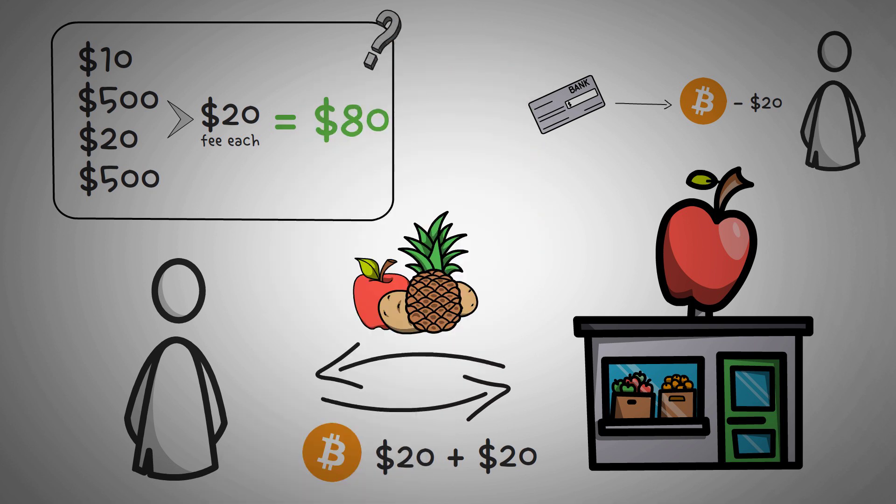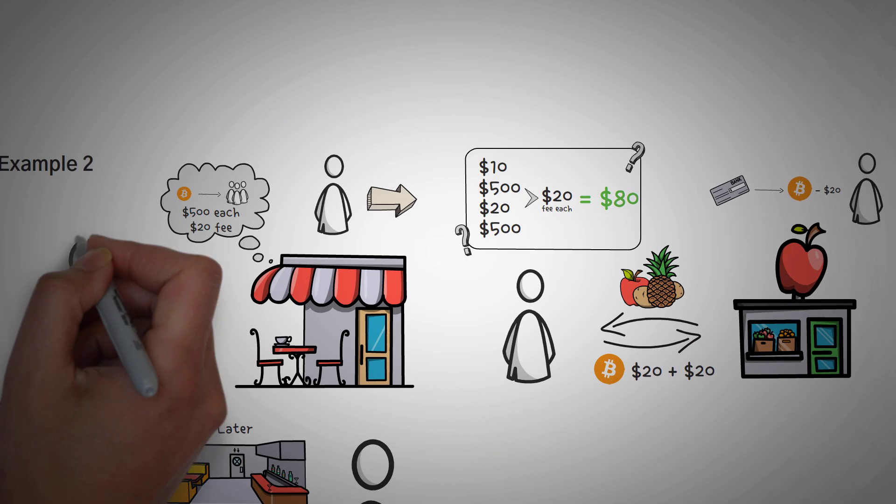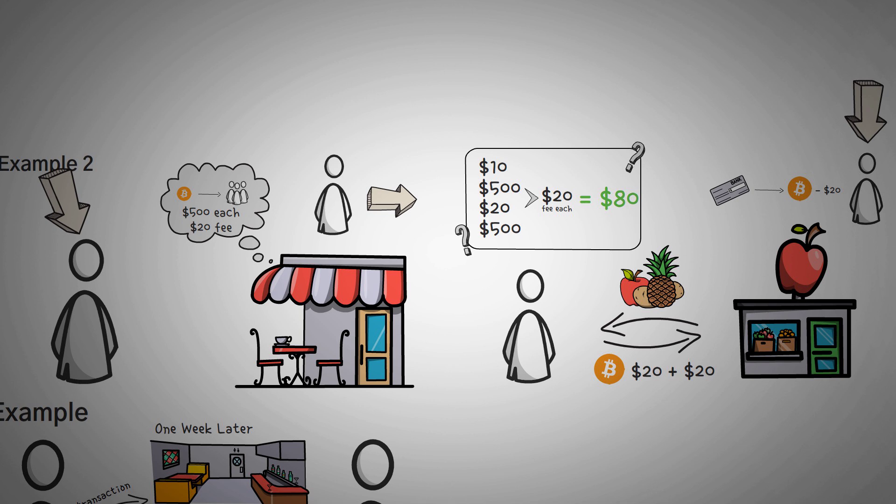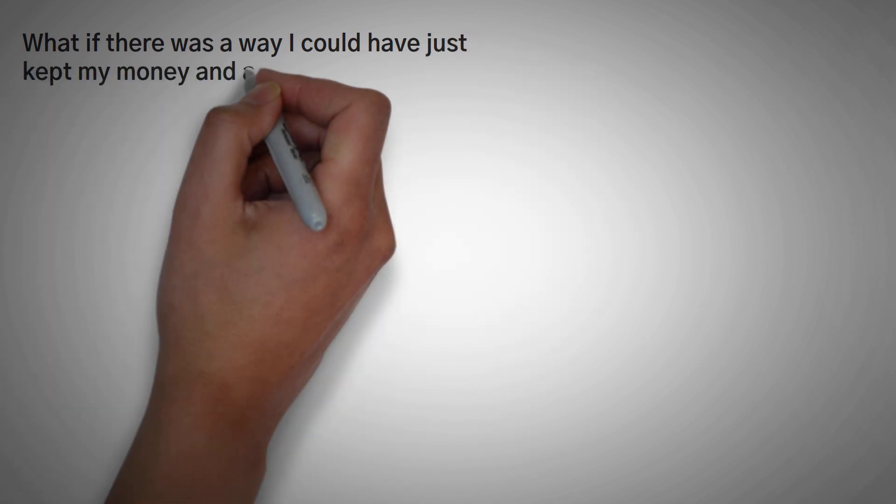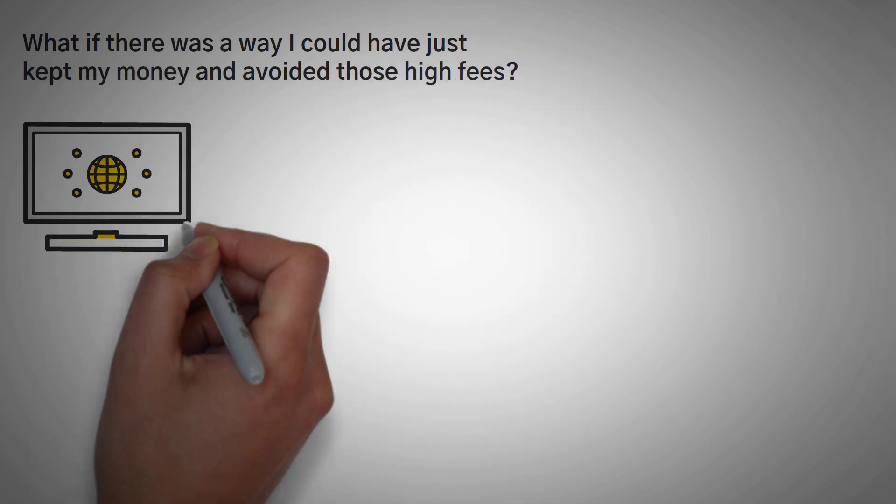Well, when we think about it, where did some of that money come from and where did it go? Some of it came from me and eventually made its way back around to me, at least $10 of it. What if there was a way I could have just kept my initial $10 and avoided those high fees?